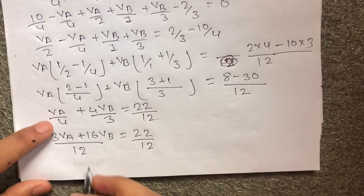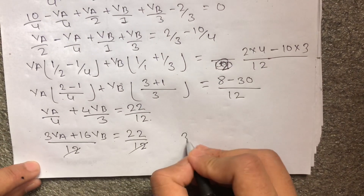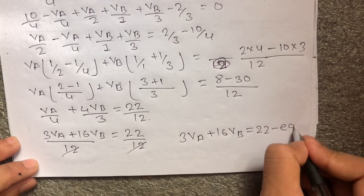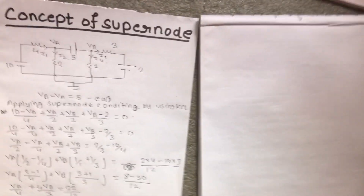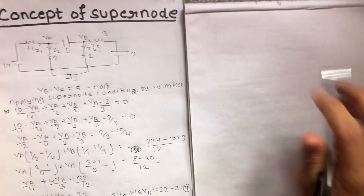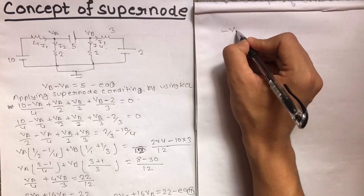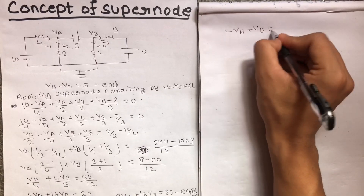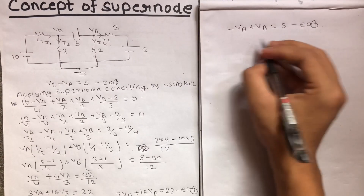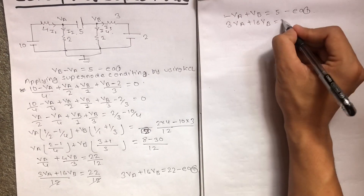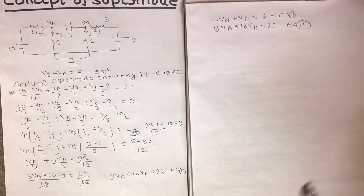This simplifies to equation 2: 3VA plus 16VB equals 22. Now solving equation 1 and equation 2 together: equation 1 is minus VA plus VB equals 5, and equation 2 is 3VA plus 16VB equals 22.